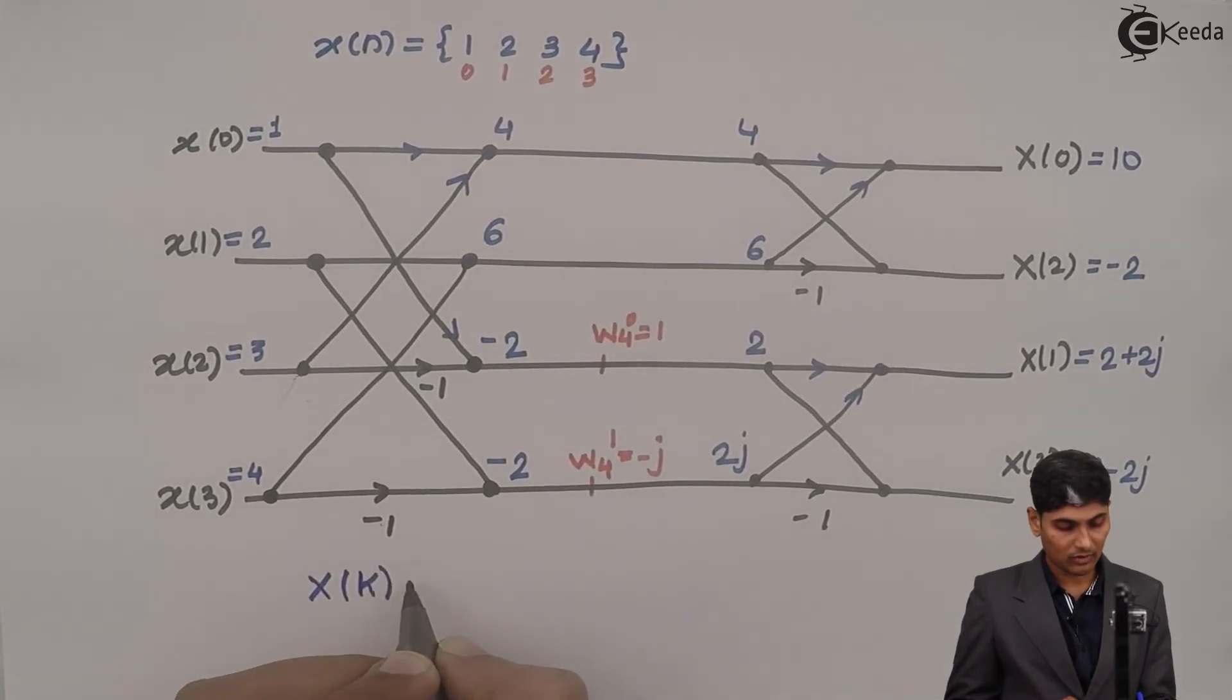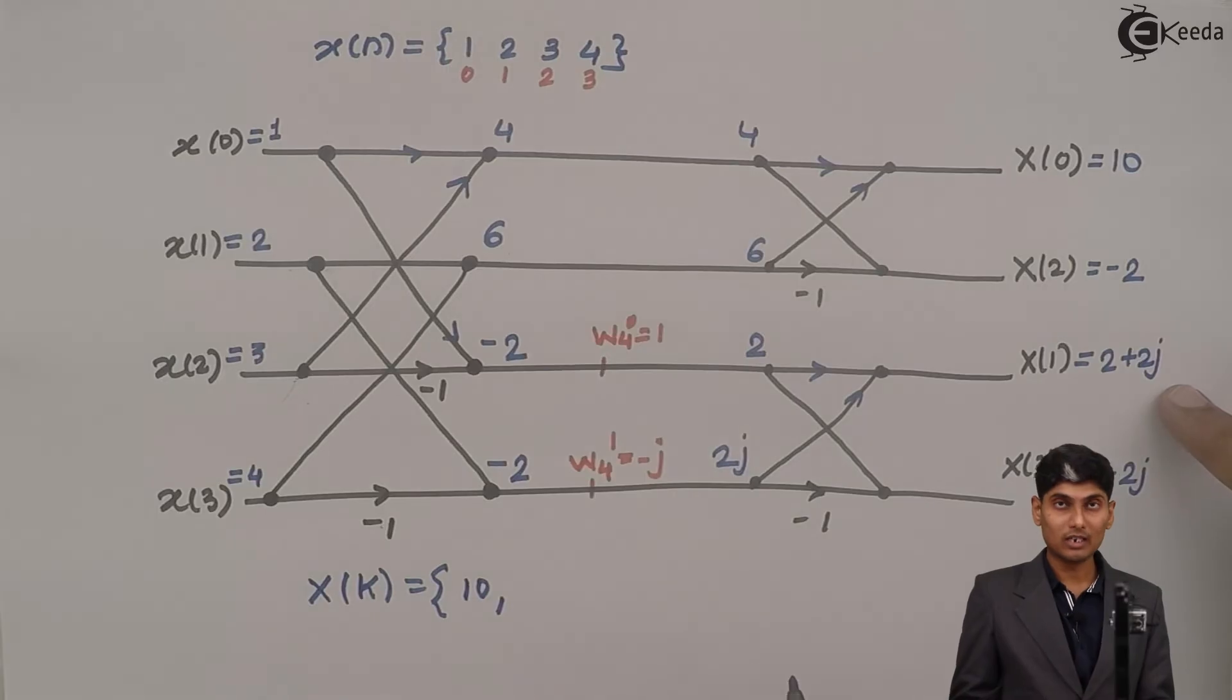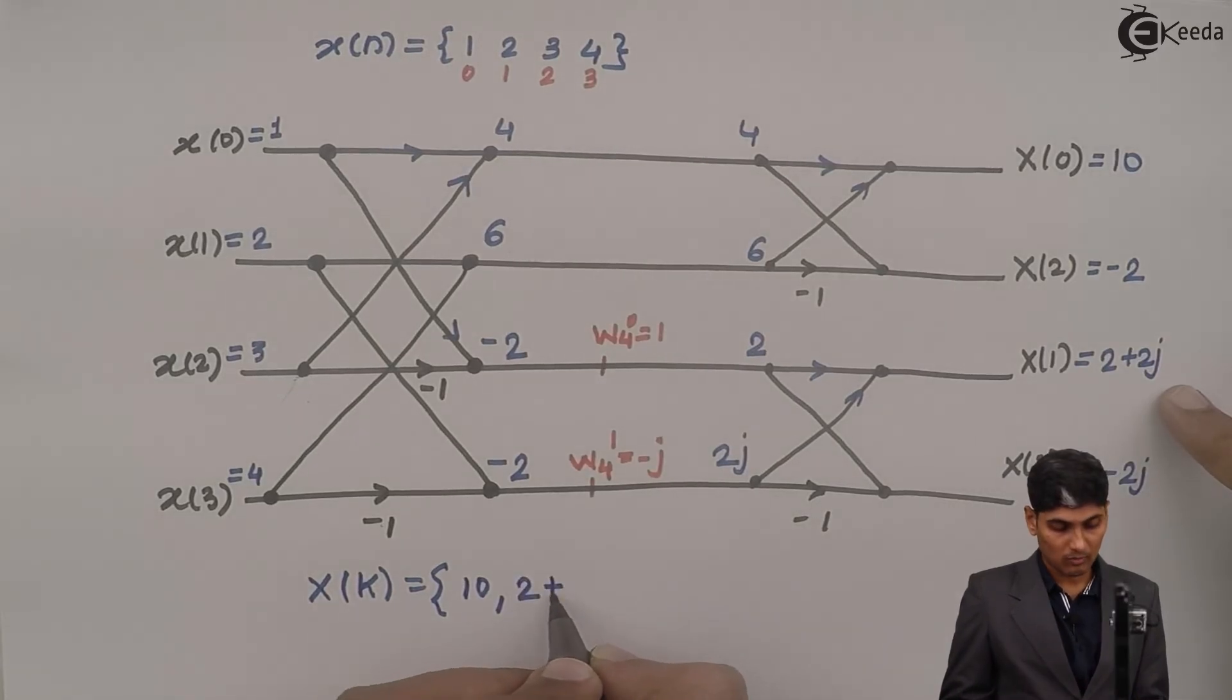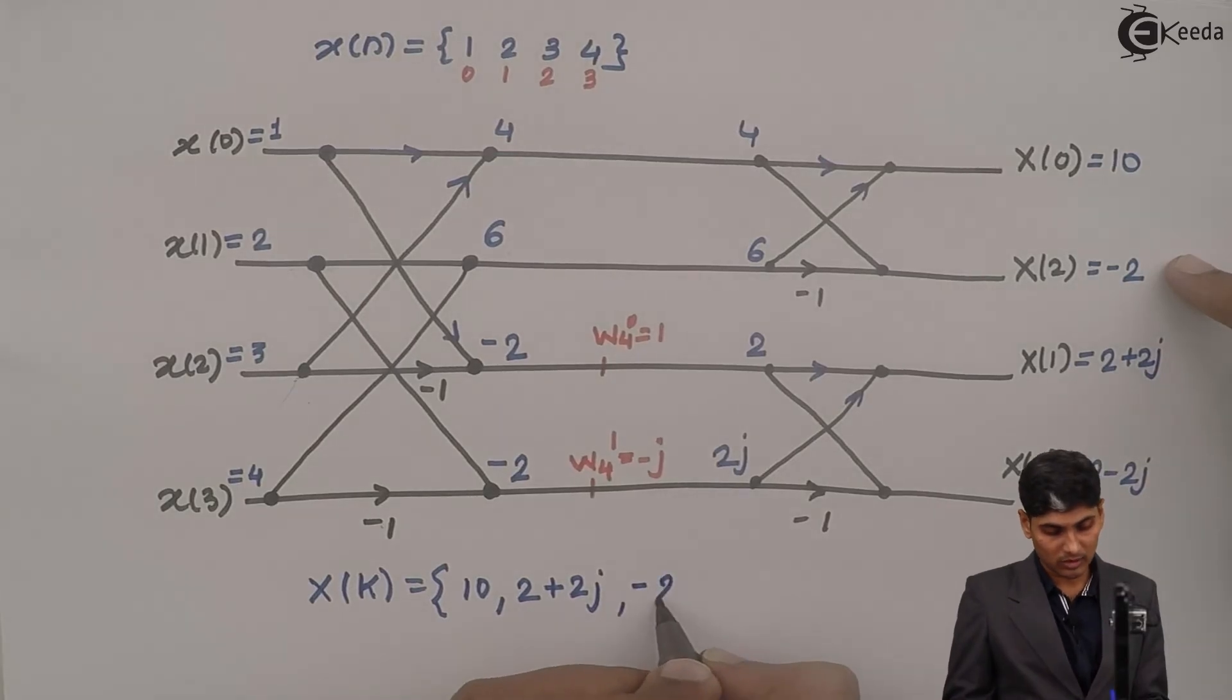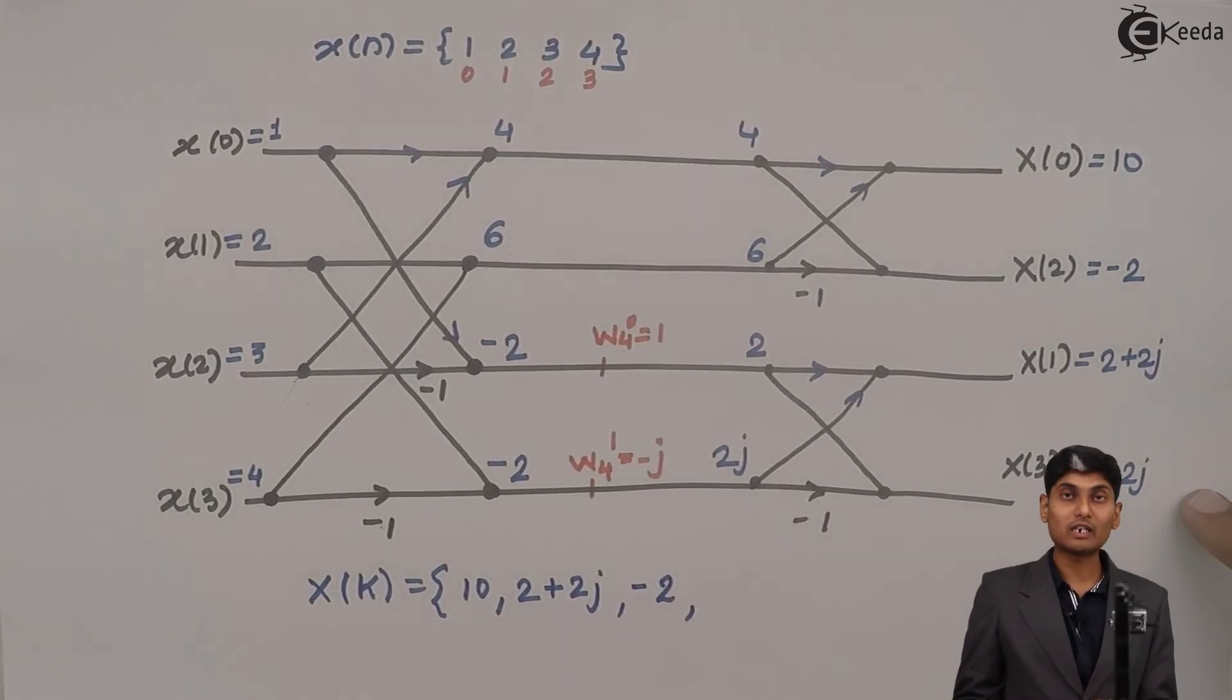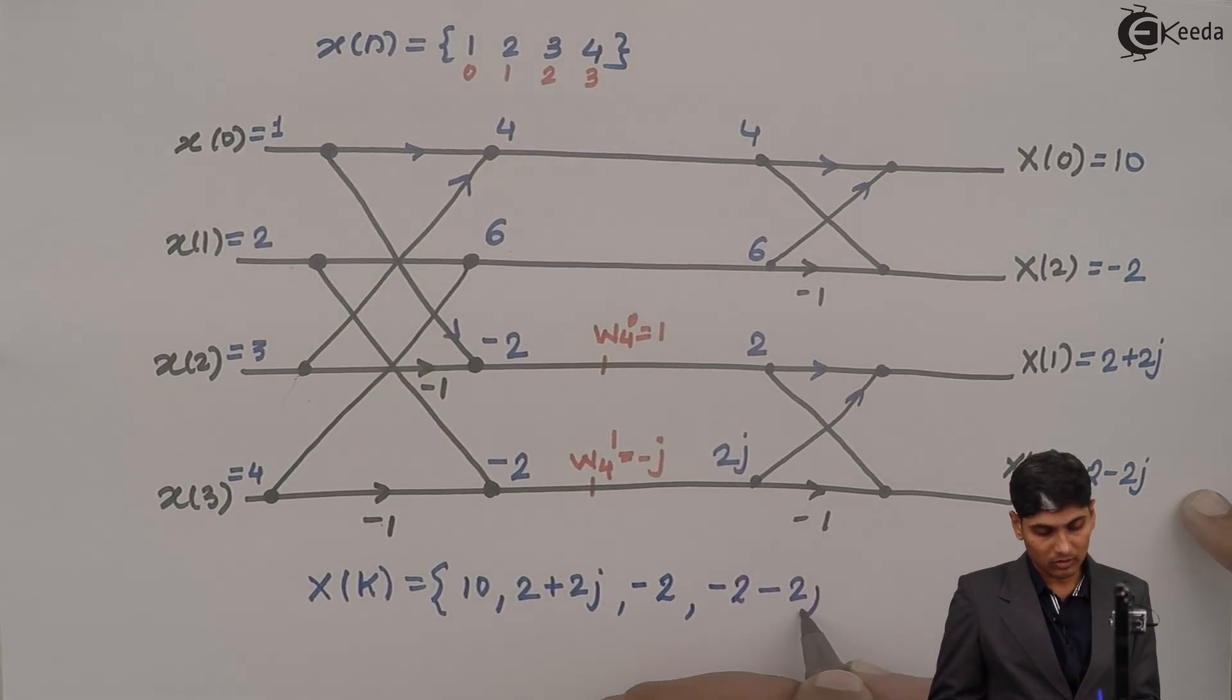Final x of k will be the first sample x of 0 which is 10, then x of 1 which is 2 plus 2j, then x of 2 which is minus 2, and finally x of 3 which is minus 2 minus 2j.